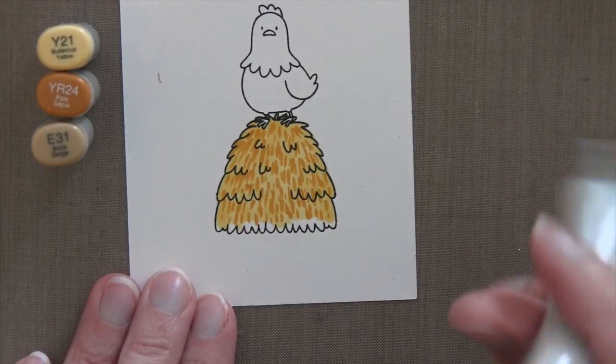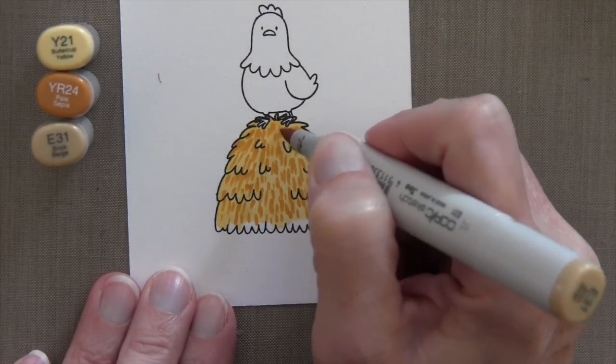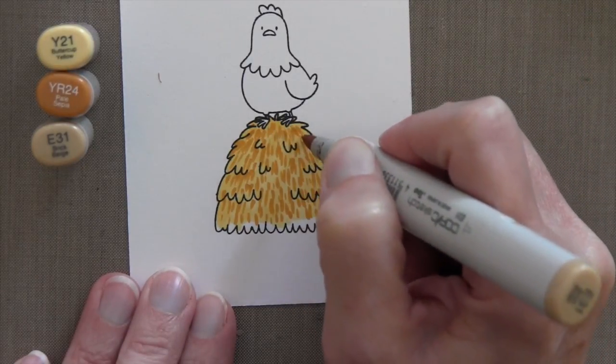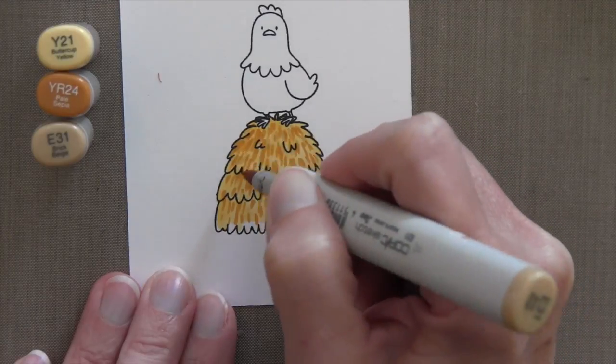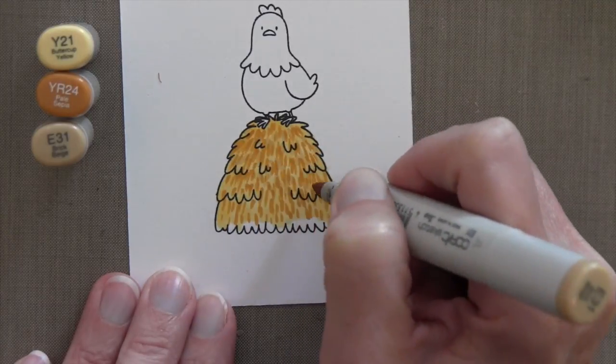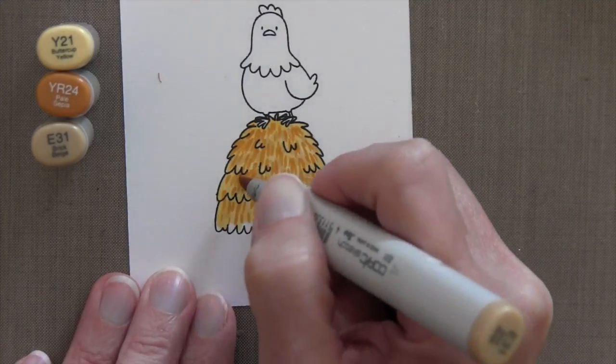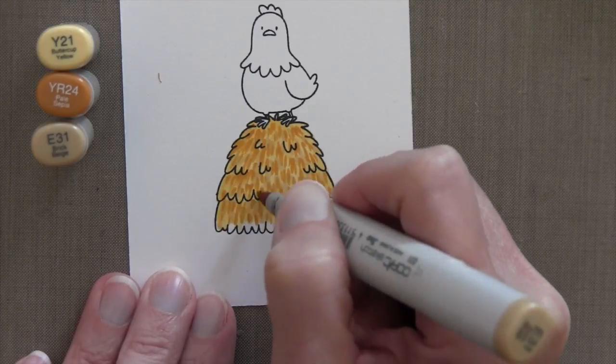And then I took the E31 which you wouldn't think would really go and I'm not sure it changed it that much but I think it filled in some of the gaps and it put a color in there that was between the Y21 and the YR24 so it just sort of made it blend a little bit better.